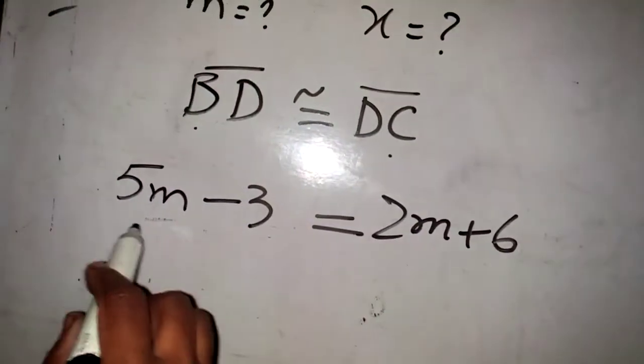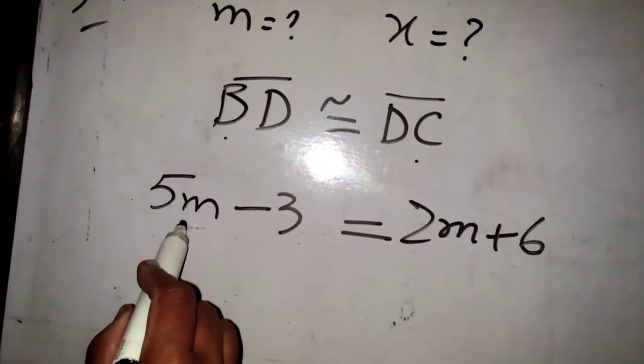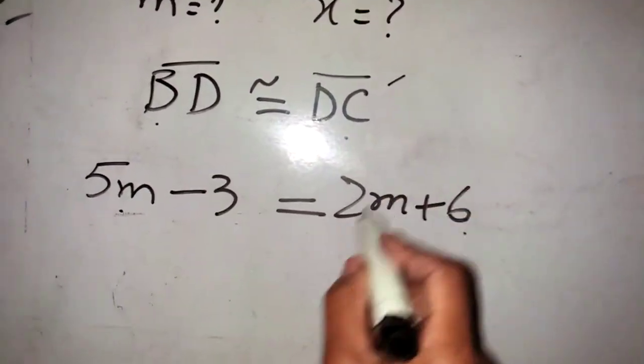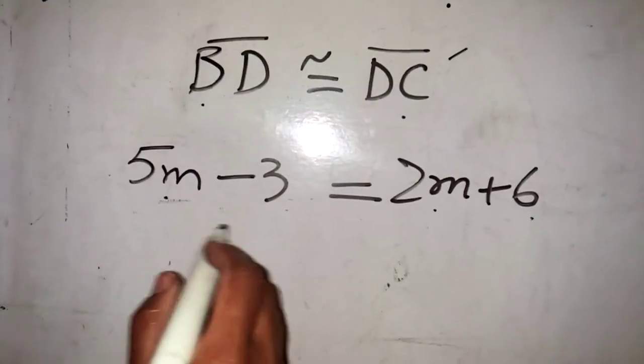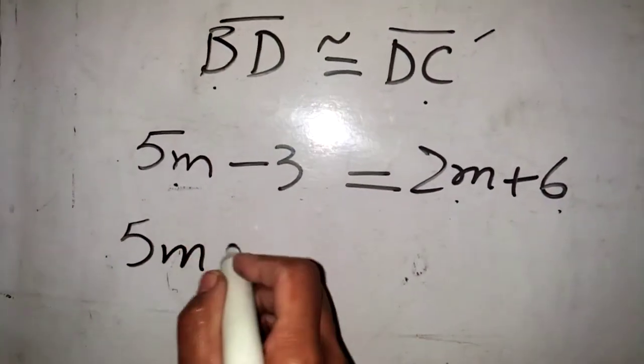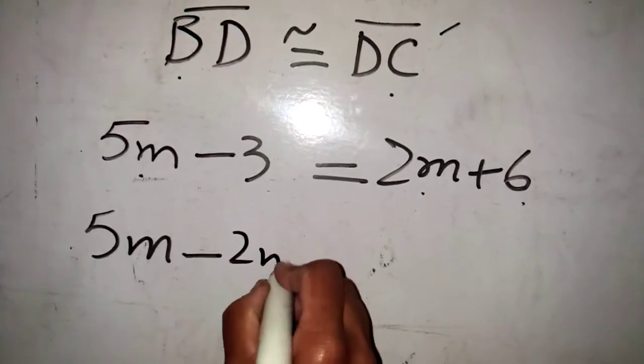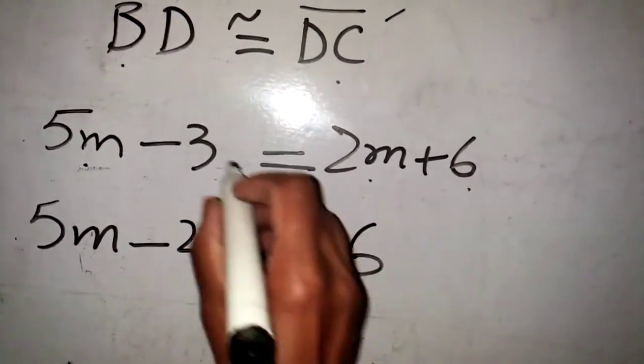This is the value of BD: 5m - 3, and 2m + 6 is the value of DC. Now we will convert like terms on the left side. 5m - 2m equals 6, and 3 will be shifted here as plus 3.